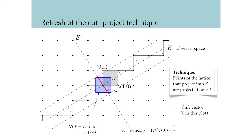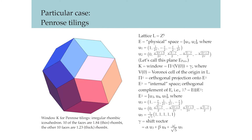These kinds of dynamics are called phason dynamics. Now let's look at a class of two-dimensional quasicrystals as a cut and projection of the five-dimensional cubic lattice and its phason dynamics.